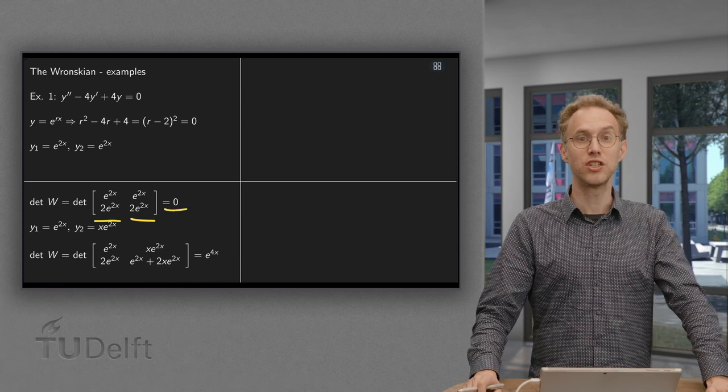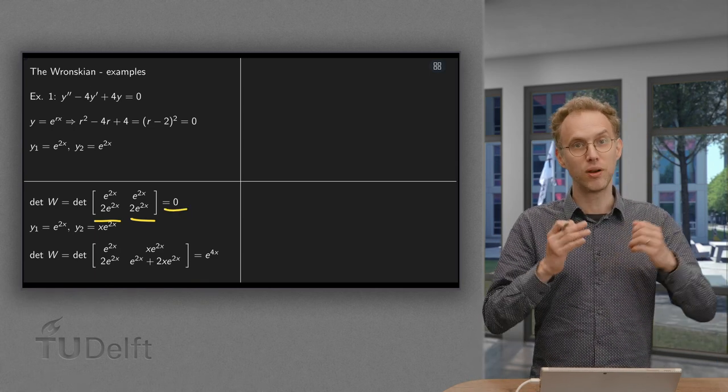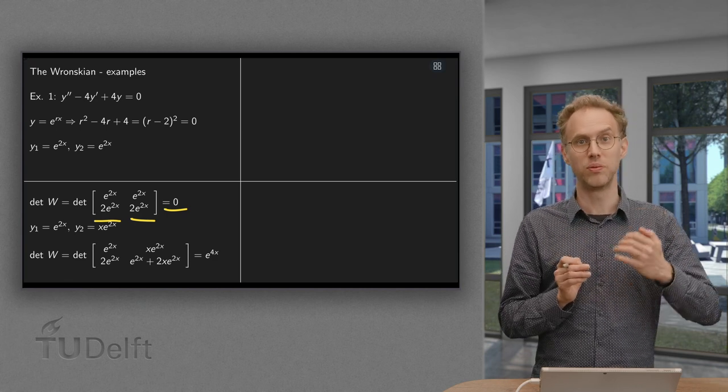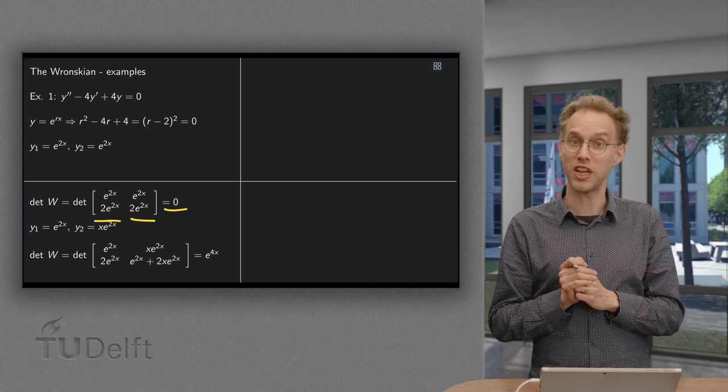So here we see something goes wrong. The determinant is zero, so the functions are in fact dependent. You can see that, of course, because they are the same.